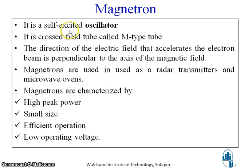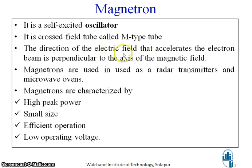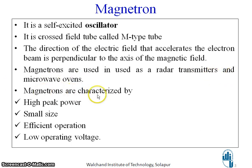Magnetron is a self-excited oscillator. It is a cross field tube called M-type tube. The direction of electric field that accelerates the electron beam is perpendicular to the axis of magnetic field, so electric field and magnetic field are perpendicular — that is why it is called a cross field tube. Magnetrons are used as radar transmitters and microwave ovens, and are characterized by high peak power, small size, efficient operation, and low operating voltage.